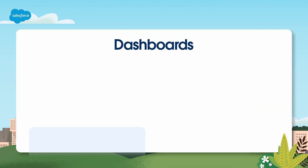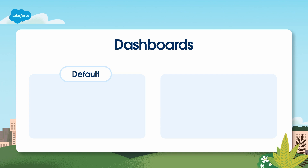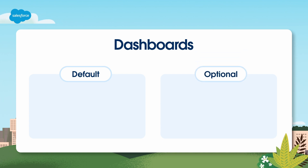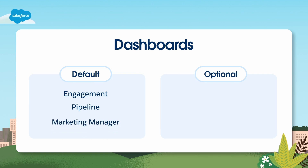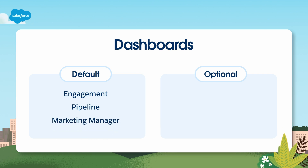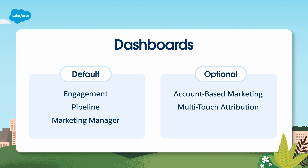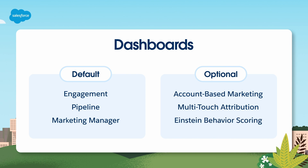B2BMA comes with a number of pre-built reporting assets, including multiple dashboards purpose-built for common marketing use cases. There are three dashboards created with every B2BMA app: the engagement dashboard, the pipeline dashboard, and the marketing manager dashboard. And there are three dashboards that must be opted into: the account-based marketing dashboard, the multi-touch attribution dashboard, and the Einstein Behavior Scoring dashboard.